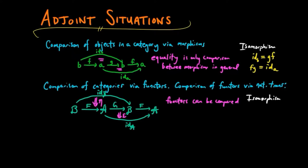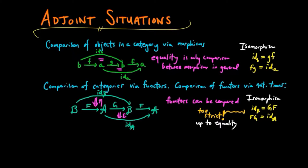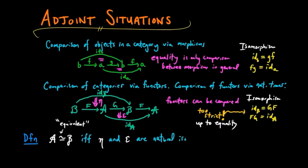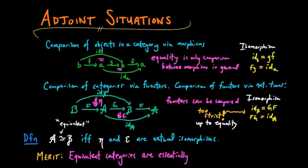We also have the notion of isomorphism between categories, but it is usually too strict a concept. It suggests sameness is up to equality, or at least just a one-to-one mapping of the structures involved. But since there exist ways to compare functors, we see that there is a better notion of sameness. We say that category A is equivalent to category B via functors F and G if and only if the natural transformations eta and epsilon are natural isomorphisms. The merit of this definition is that equivalent categories are essentially the same, meaning sameness is up to isomorphism, and not just equality.